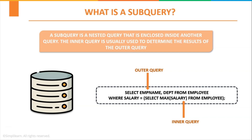Let us understand this with an example. Consider this syntax: SELECT employee_name, department FROM employee WHERE salary = (SELECT MAX(salary) FROM employee). Here, SELECT employee_name, department FROM employee is the outer query, and the rest is the inner query. When applied, the subquery executes first and selects the maximum salary from the employee table, then passes that result to the WHERE clause of the outer query, which returns the employee name and department where salary equals the maximum salary.